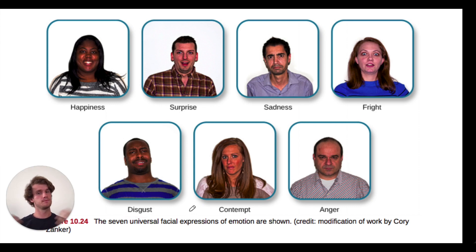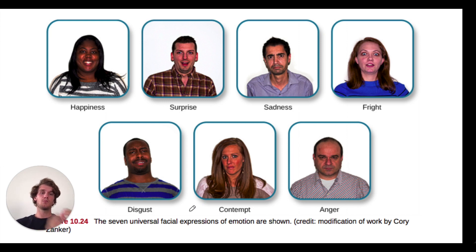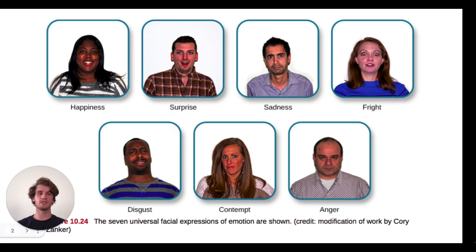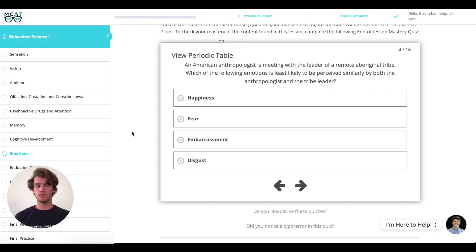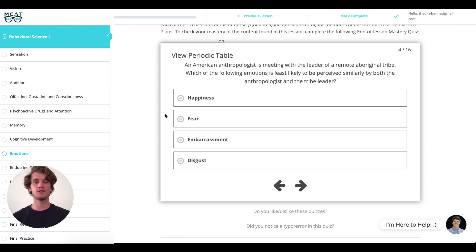Disgust is universally recognizable. So when we're thinking about this question, we need to think about what are the three pairs plus the outlier, and which of the answer choices doesn't fit into either a pair or the outlier. The question is asking which emotion won't be able to be communicated across cultural boundaries — in other words, which is not one of these seven primary emotions.